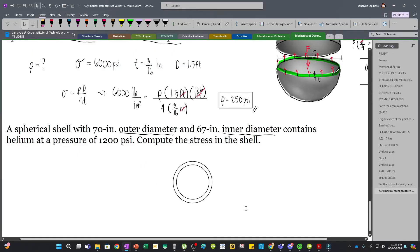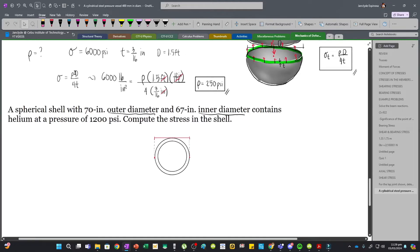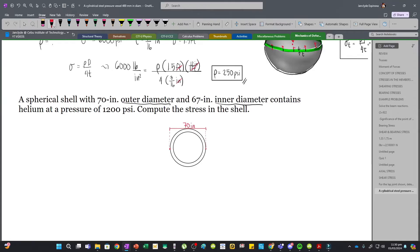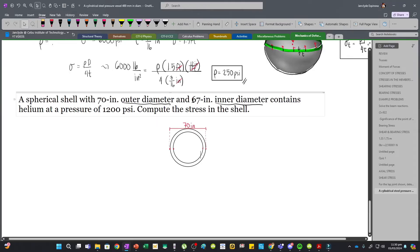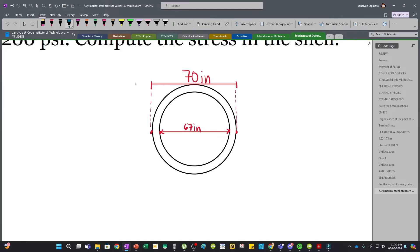Now let's label this figure. First, the outer diameter is measured from this point up to this point, so this is our outer diameter which is 70 inches. Then our inner diameter is from this point up to this point, so that will be 67 inches.